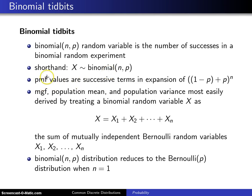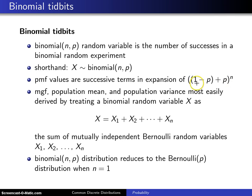Number three, the probability mass function values turn out to be successive terms in the expansion of (1 minus P plus P) to the N power. If you don't simplify the expression on the inside and raise it to the N power, you get (1 minus P) raised to the N power as the first term and P to the N power as the last term, with all the terms in between.